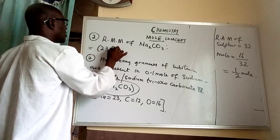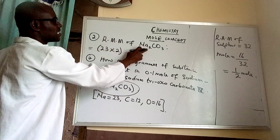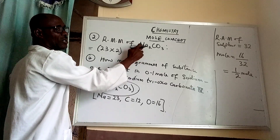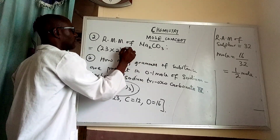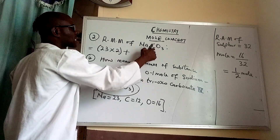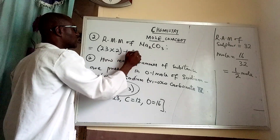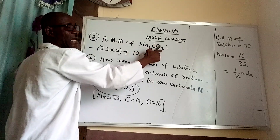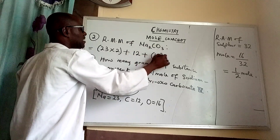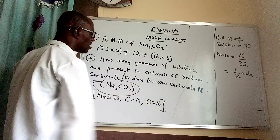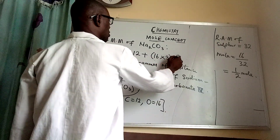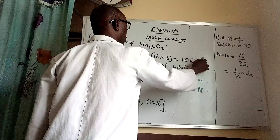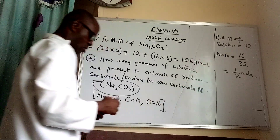Relative molecular mass of sodium trioxocarbonate(IV): sodium is 23 multiplied by 2 (because there are two sodium atoms) = 46; plus carbon is 12; plus oxygen is 16 times 3 = 48. Adding these together gives 106 grams per mole.